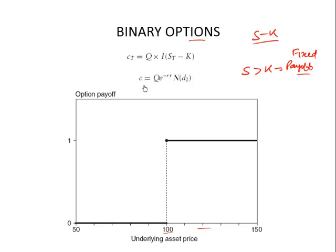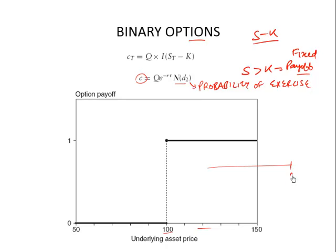You don't need to remember the pricing of a binary option, but the premium of a binary option can be calculated as the present value of the fixed payoff multiplied by N(d2). N(d2) is the risk-neutral probability of exercise of an option. So there is a payoff of Q at maturity, and the probability of that payoff occurring is N(d2). The present value would be Q × N(d2) × e^(−rT) — that is the value of a binary call option.